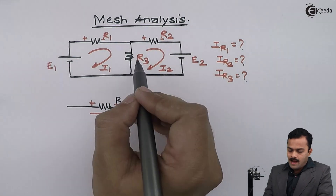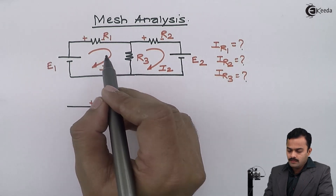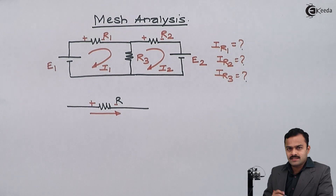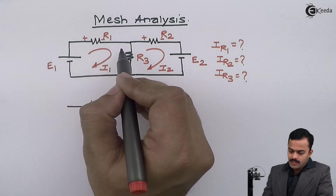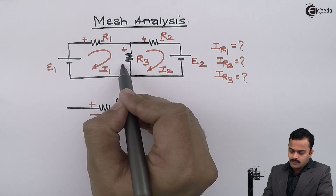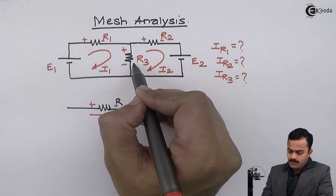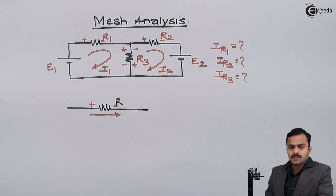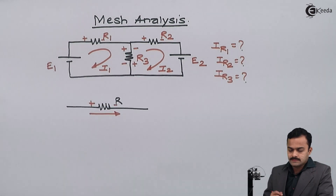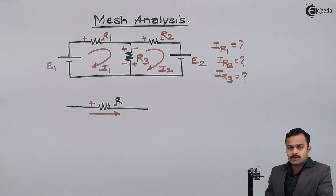R3 is a common resistance between loop 1 and loop 2, so it will have two voltage drops. As per I1, it will have the voltage drop of one polarity, and as per I2, it will have the voltage drop of the other polarity.